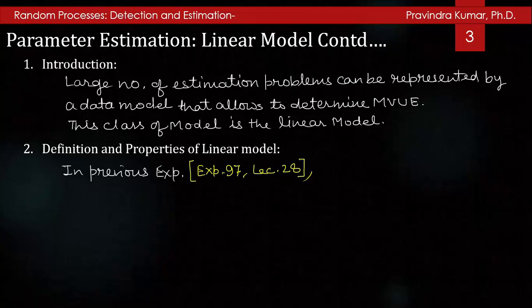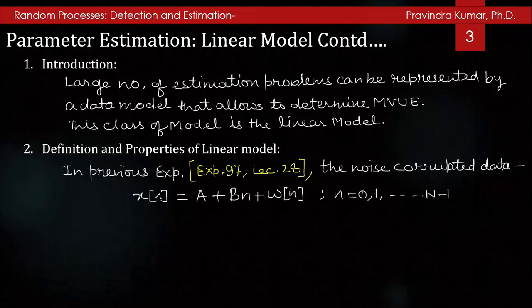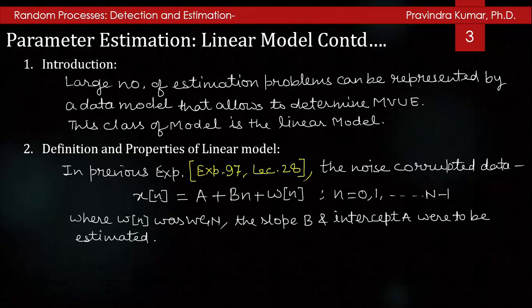For the definition and properties of the linear model, recall from example 97 in lecture 28 that the noise-corrupted data x(n) = a + b*n + ω(n), where small n is from 0 to N minus 1, and where ω(n) is the white Gaussian noise process, and the slope b and intercept a were to be estimated. This is the example of fitting a straight line through noisy corrupted data.